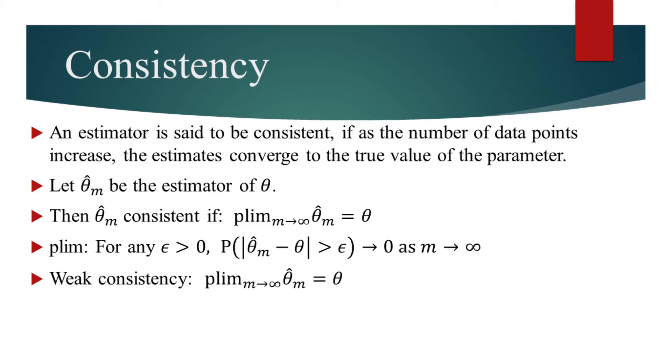An estimator is said to have strong consistency if it almost surely converges to the true value of the parameter. That is, as the number of data points approaches infinity, the probability of the estimate to equal the true value of the parameter approaches one.